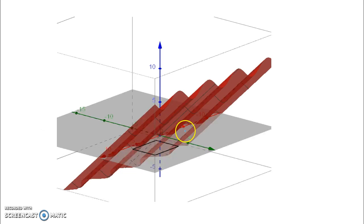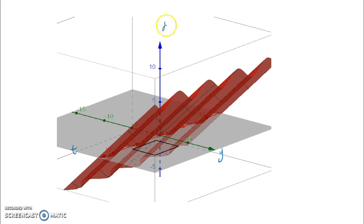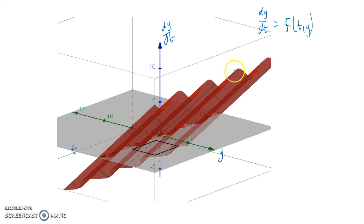To visualize this, consider a differential equation where we have the t axis, the y axis, and the dy/dt axis. What we get is a multivariable function: dy/dt is a function of both t and y. While this requires some Calculus 3 background, the value of dy/dt changes in both directions — it's dependent on both t and y.